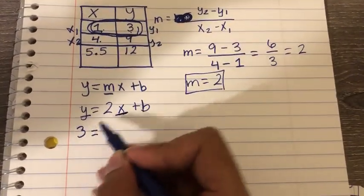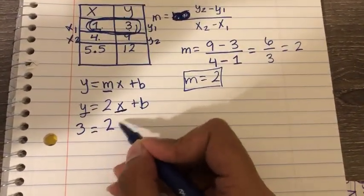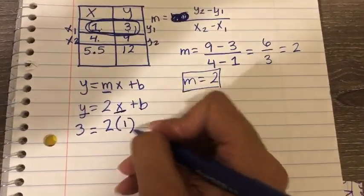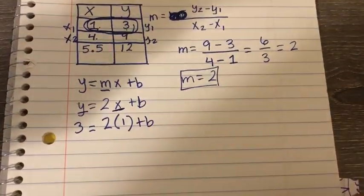So I can do 3, which is y, equals 2, and then instead of x, I'll put 1 plus b. Now I can solve this.